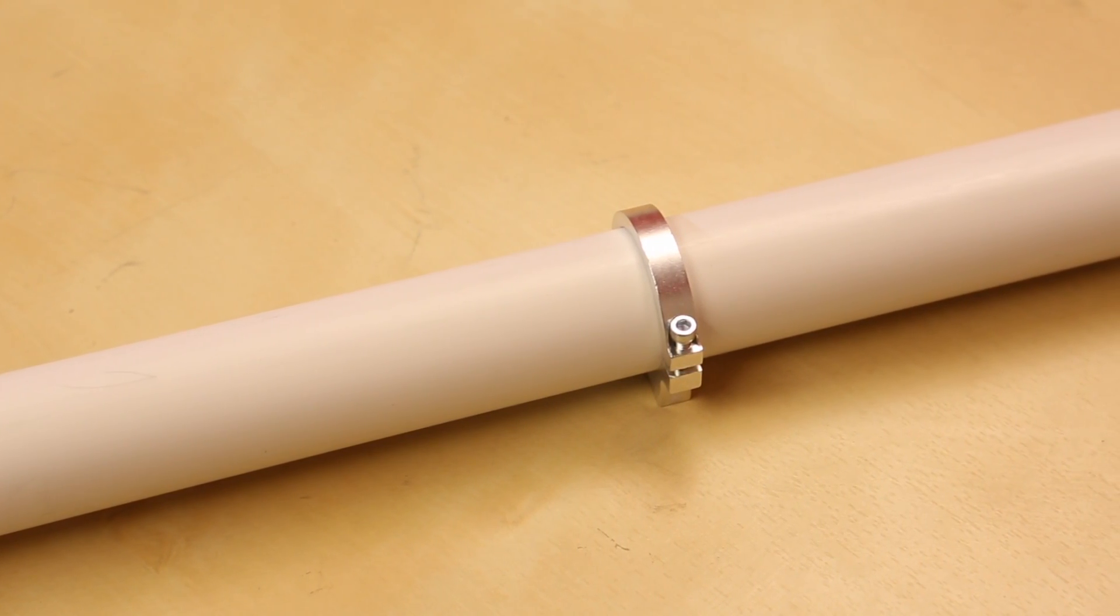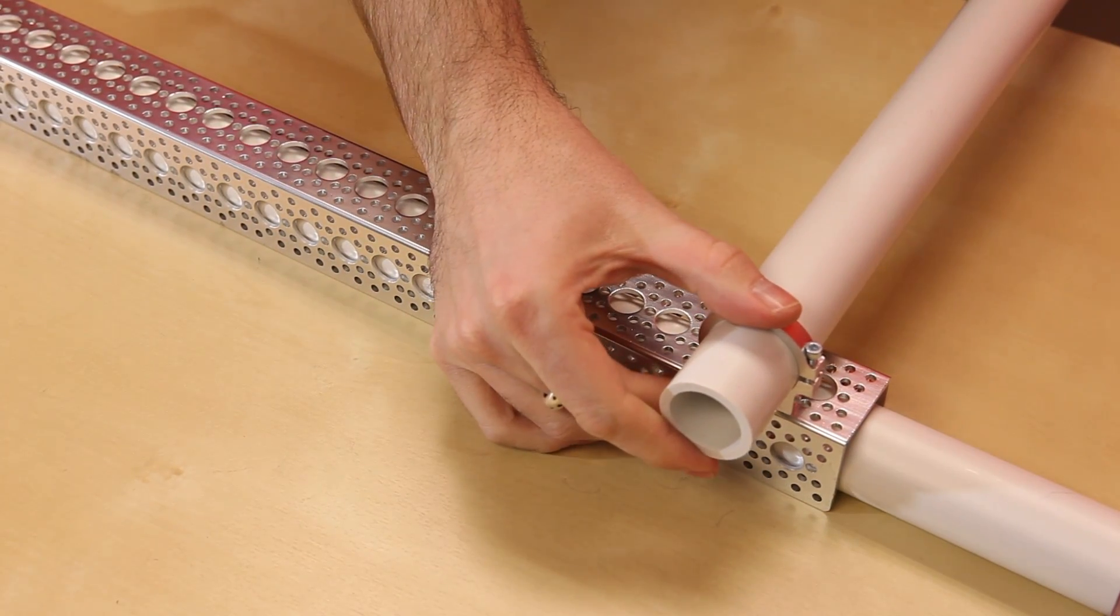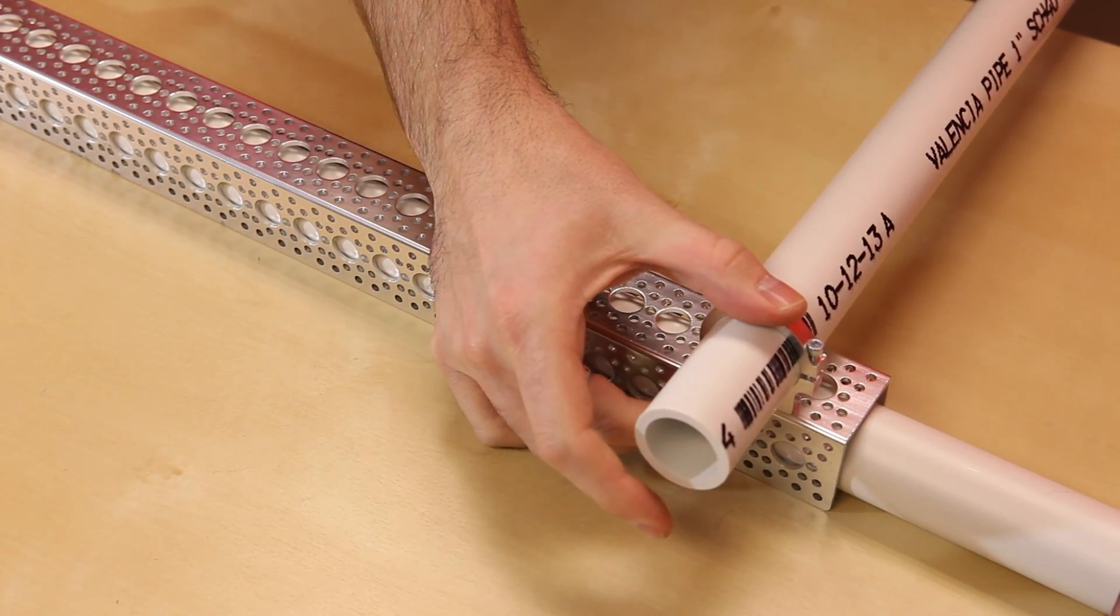Next up is the other PVC clamp which is just a clamp mount. This fits around the pipe in much the same way and allows you to connect directly to the top or the outside of the channel like that.